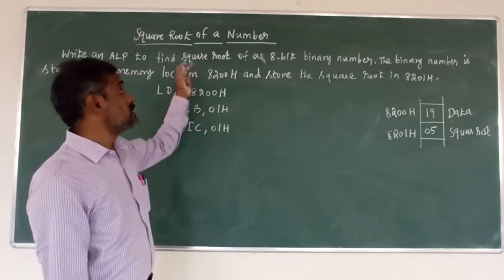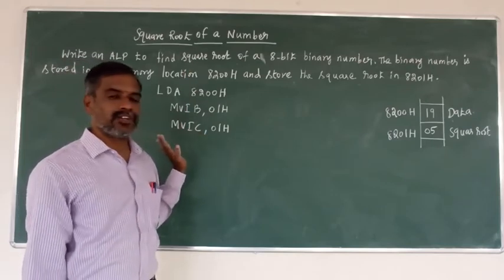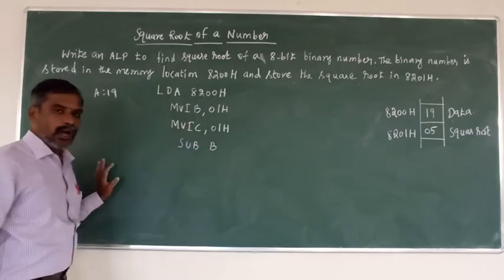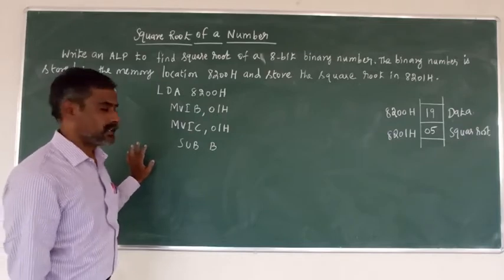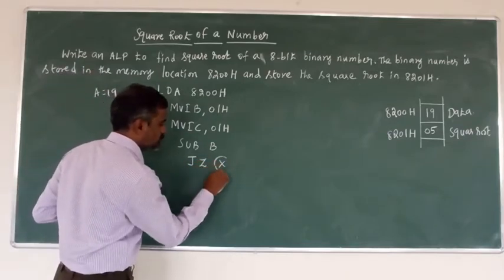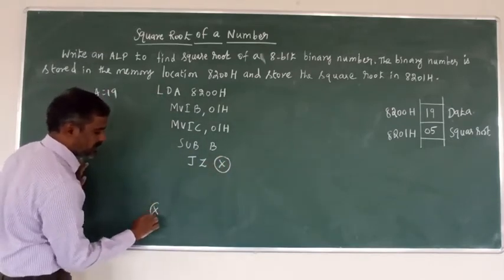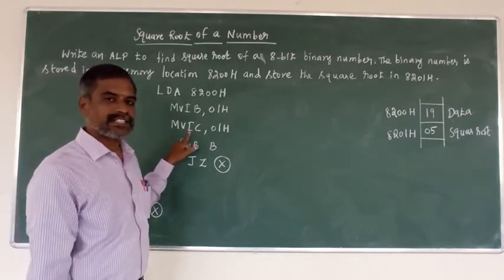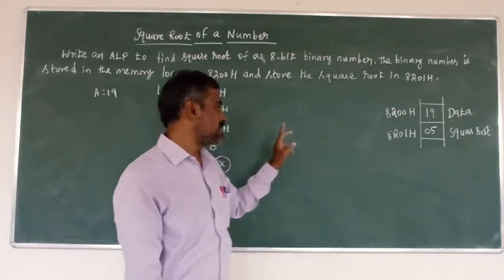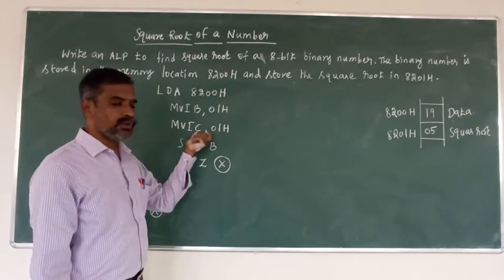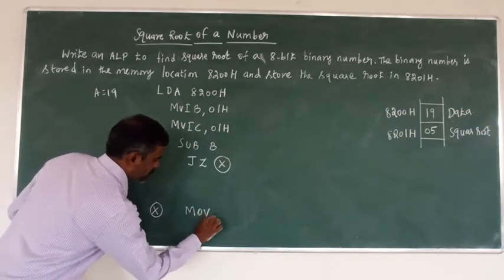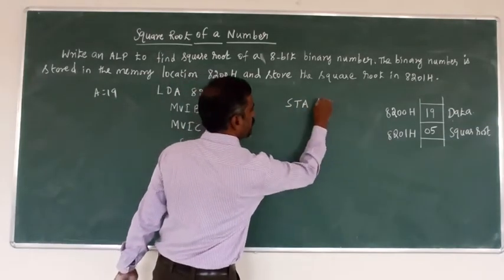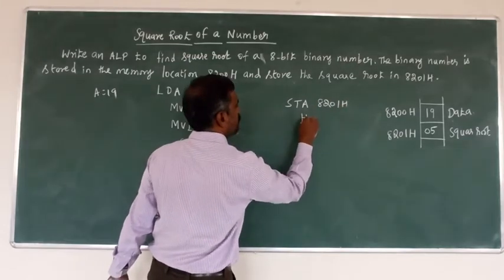The C register final result is the square root of the given number. We initialize C to 01H. To subtract the accumulator with the B register, we use the SUB B instruction. After subtraction, check the result — whether it is 0 or 1. If result is 0, jump directly to the store instruction. Jump to: MOV A, C — move C register data to accumulator — then STA 8201H to store the result, and halt the program.